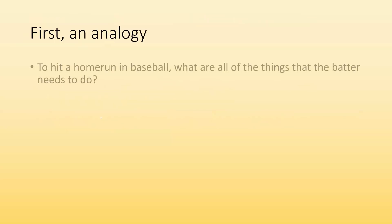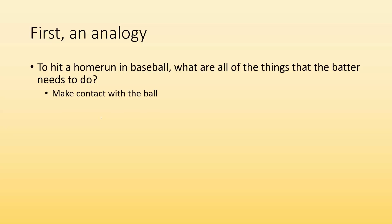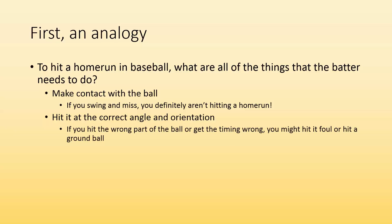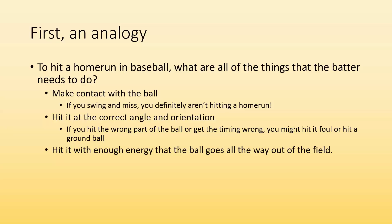First, let's start with an analogy. To hit a home run in baseball, what does the batter need to do? First, they need to make contact with the ball — if they swing and miss, you're definitely not hitting a home run, so there's got to be some sort of collision with the ball. Next, you need to hit it at the correct angle and orientation, meaning if you hit above the ball you might ground it out, or hit it foul. You also need to hit it with enough energy so that the ball travels over the wall — a home run.